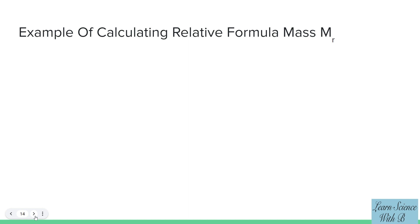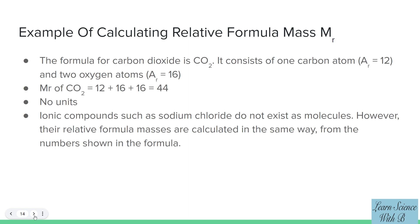Example of calculating relative formula mass MR: For example, the formula for carbon dioxide is CO2. It consists of one carbon atom, AR equals 12, and two oxygen atoms, AR equals 16. MR of CO2 equals 12 plus 16 plus 16 equals 44. Like AR values, MR values are just numbers. They have no units because they are relative masses.